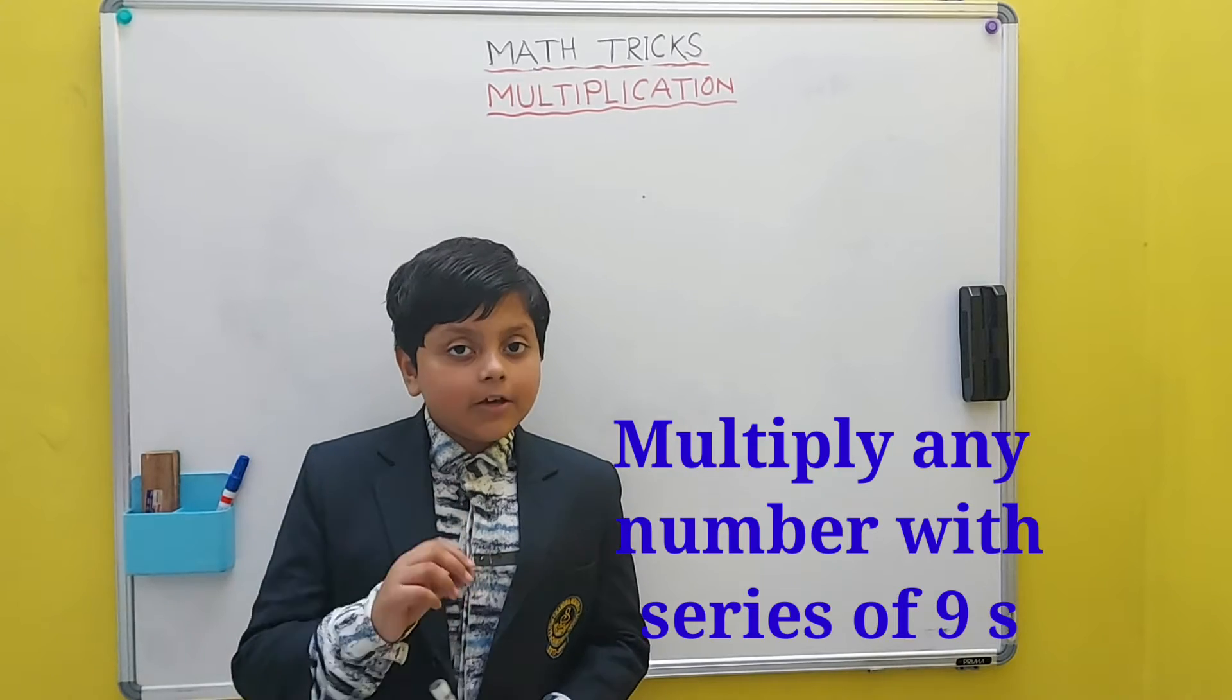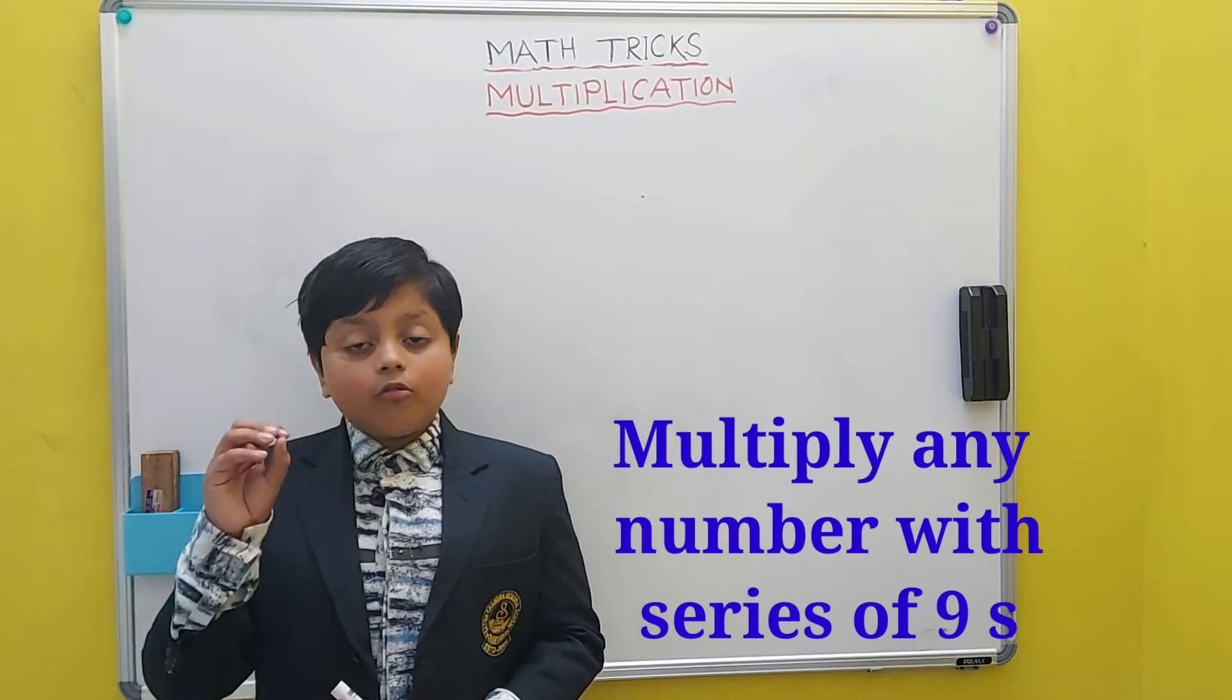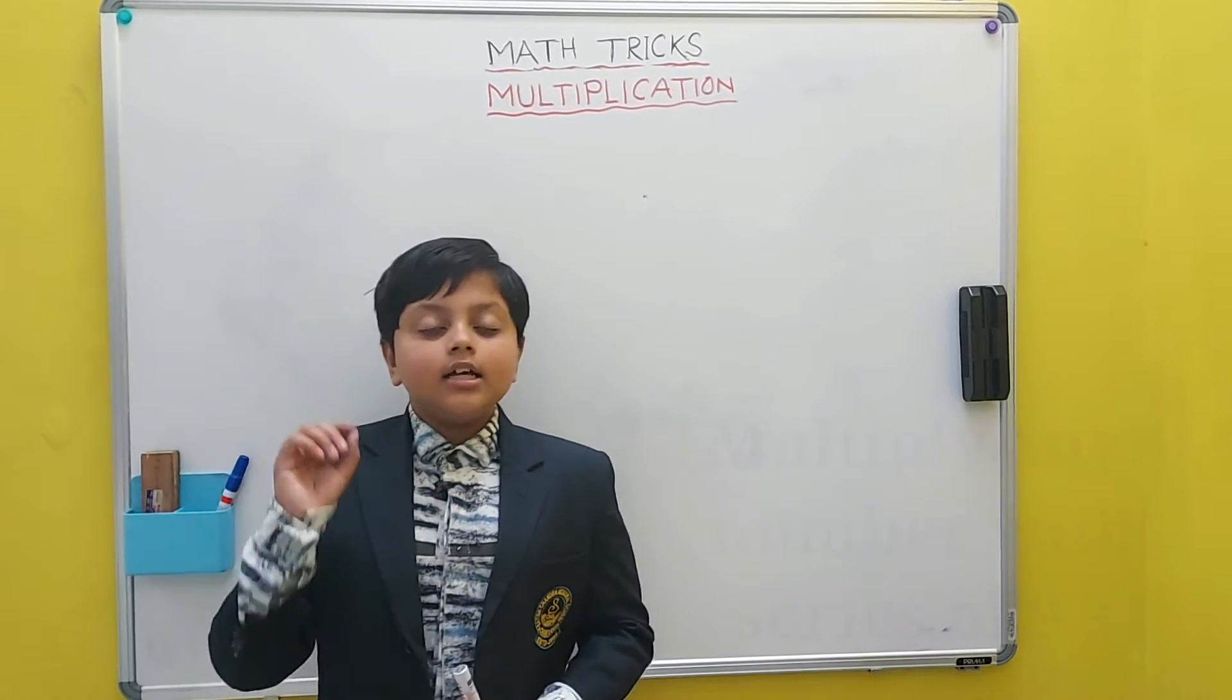For example, if we have a 3 digit number, we will have 2 digit or 1 digit of 9s that we will be multiplying with. Let's take the first example which will be 548.